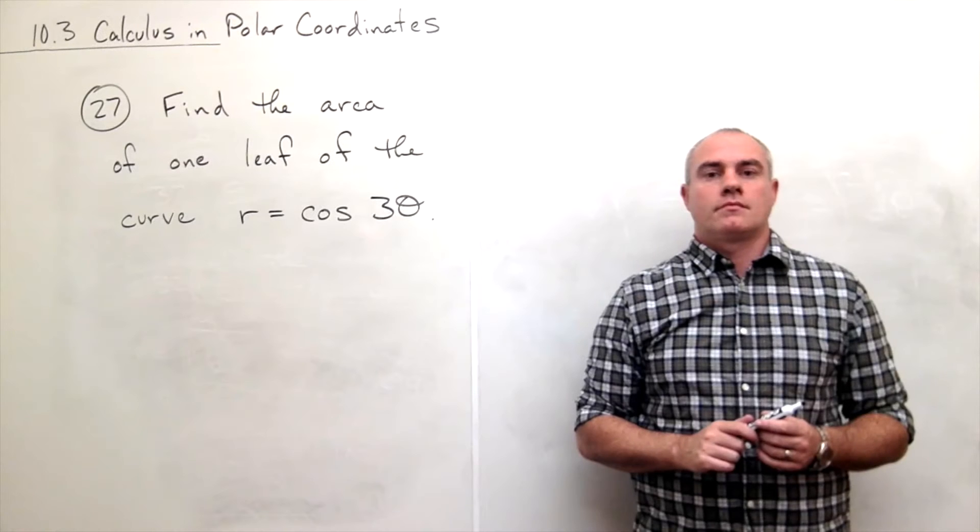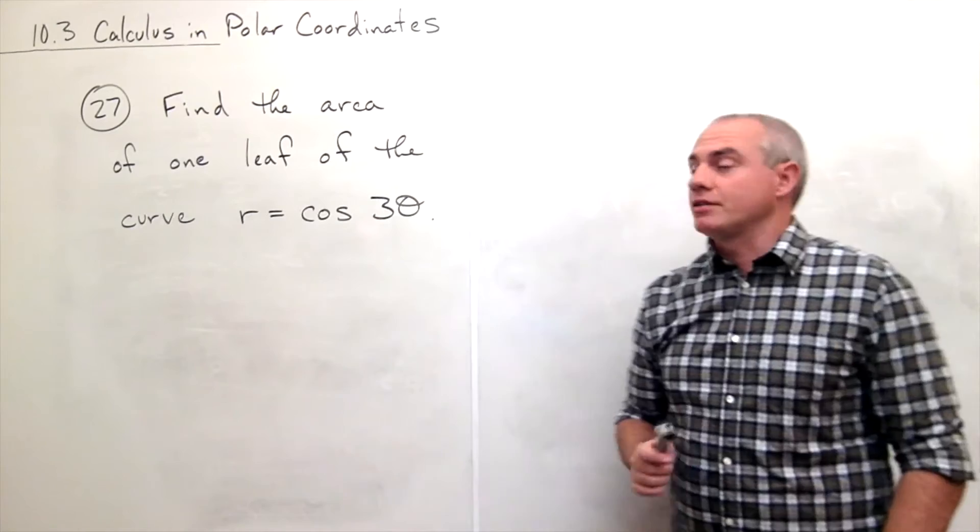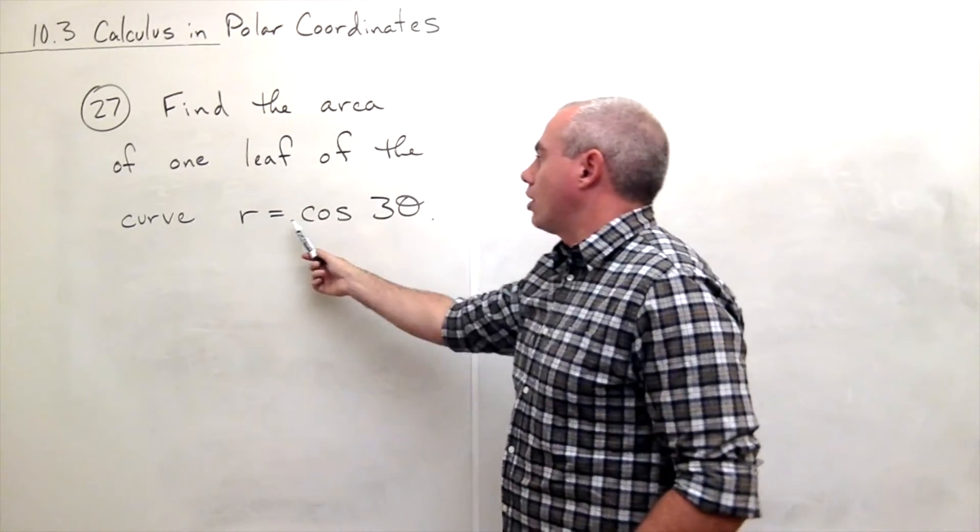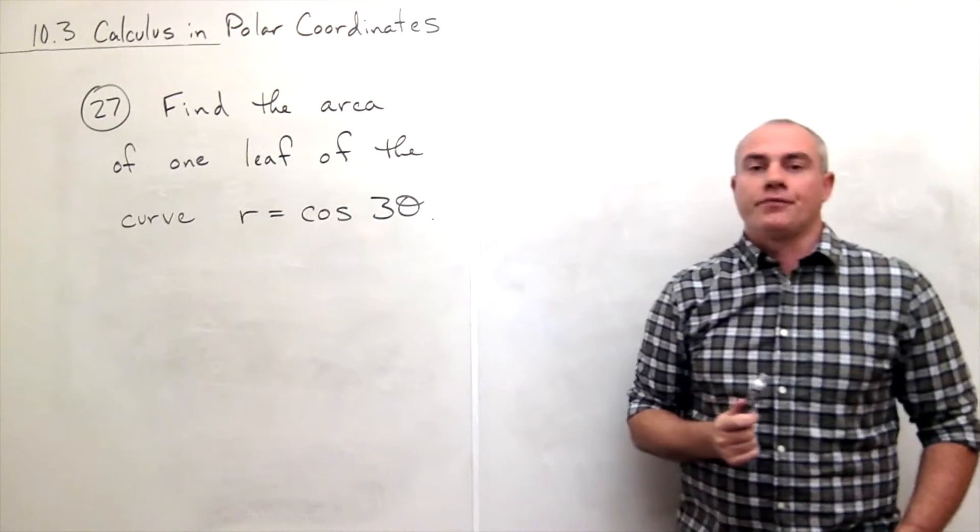I'm the Calculus Professor and today I'll be talking to you about calculus and polar coordinates. In problem number 27 we'd like to find the area of one leaf of the curve r equals cosine of three theta.